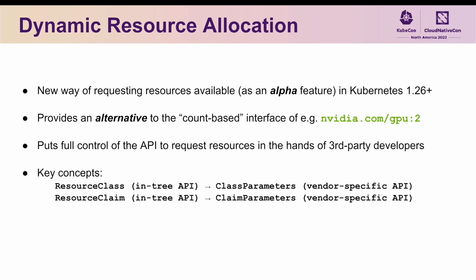What makes DRA so powerful is that it puts full control of the API used to request resources directly in the hands of the vendors developing drivers against DRA, where the key abstractions to keep in mind are that of the resource class and the resource claim, which are in-tree APIs referenced directly within a pod, as well as their corresponding class parameters and claim parameters, which provide a means for vendors to bring their own custom APIs to these abstractions.